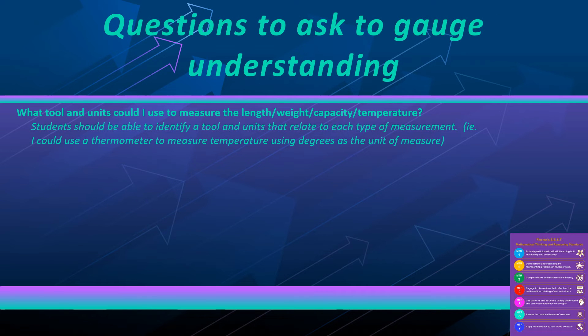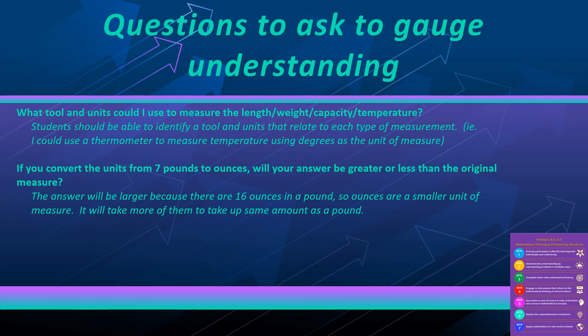Here are some questions to ask to gauge student understanding. What tool and units could I use to measure the length of this object or weight of this object, capacity, temperature? Students should be able to identify a tool that measures that specific measurement type and then also discuss what units might be best to use. If you convert the units from seven pounds to ounces, will your answer be greater or less than the original measure? You want students to understand that it's equivalent. Ounces are just a smaller unit, so it takes more of them to take up the same amount of space as those seven pounds.